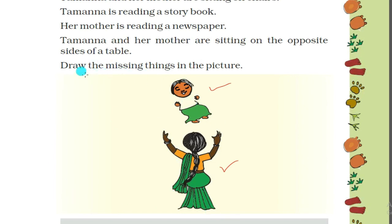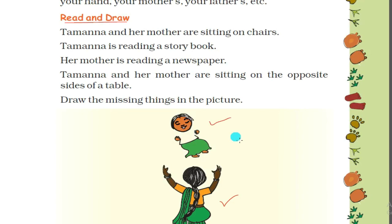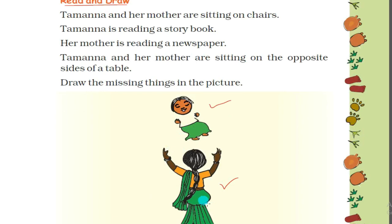In this picture you have to draw the missing things. Tamanna is reading a story book so you have to draw a story book here. Her mother is reading a newspaper so draw a newspaper here. They are sitting on opposite sides of the table so draw the table in between, and chairs too.